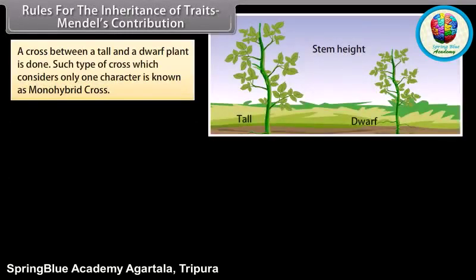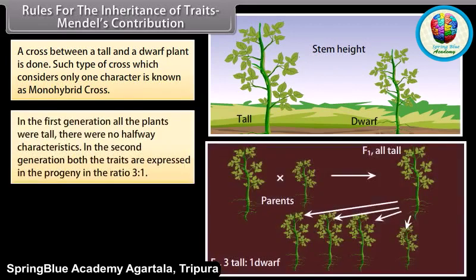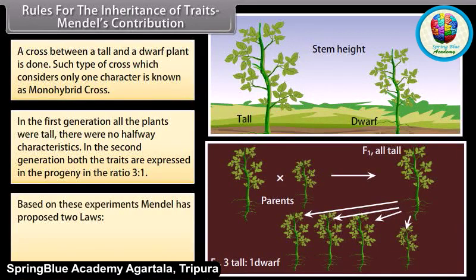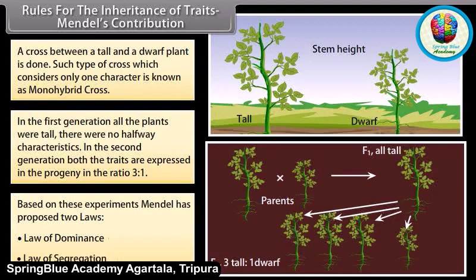A cross between a tall and a dwarf plant is done. Such a type of cross which considers only one character is known as a monohybrid cross. In the first generation, all the plants were tall — there were no halfway characteristics. In the second generation, both the traits are expressed in progeny in the ratio three to one. Based on these experiments, Mendel proposed two laws: the law of dominance and the law of segregation.